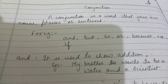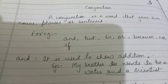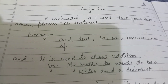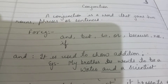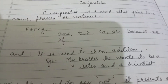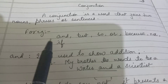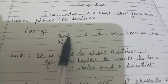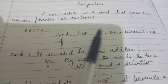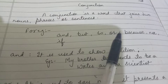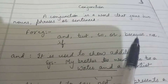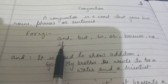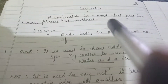Whatever you want to say can come in one single sentence. There are some conjunctions, and in your course the conjunctions are: and, but, so, or, because, nor, and if. Let us start with 'and'.